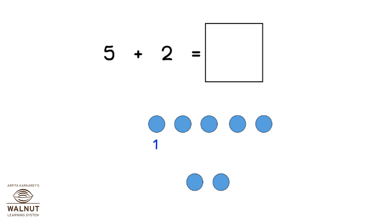How many dots do we have? 1, 2, 3, 4, 5, 6, 7. We have 7 dots. That is the answer.